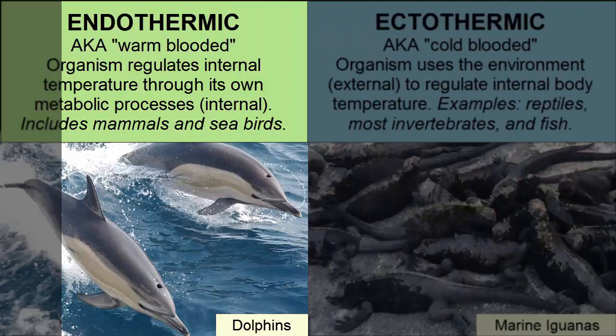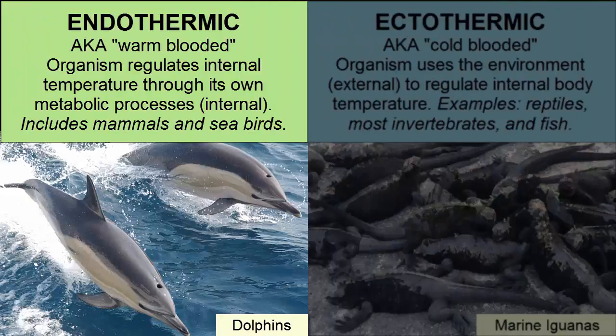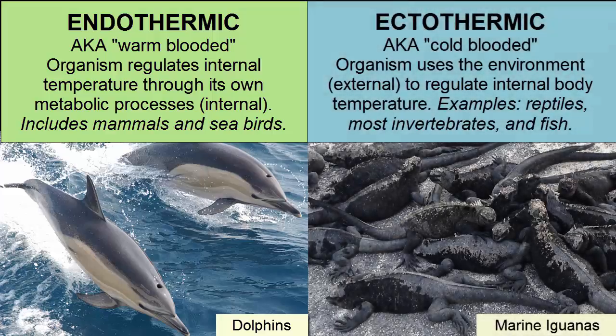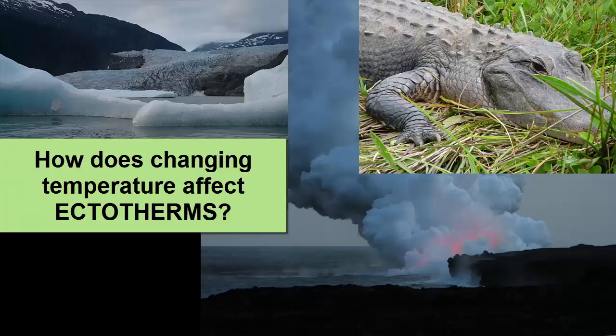We call organisms endothermic if they have internal processes that can be used to regulate temperature — also referred to as warm-blooded. Endothermic organisms include mostly marine mammals and birds. Ectothermic organisms in the ocean can handle only very narrow temperature ranges.